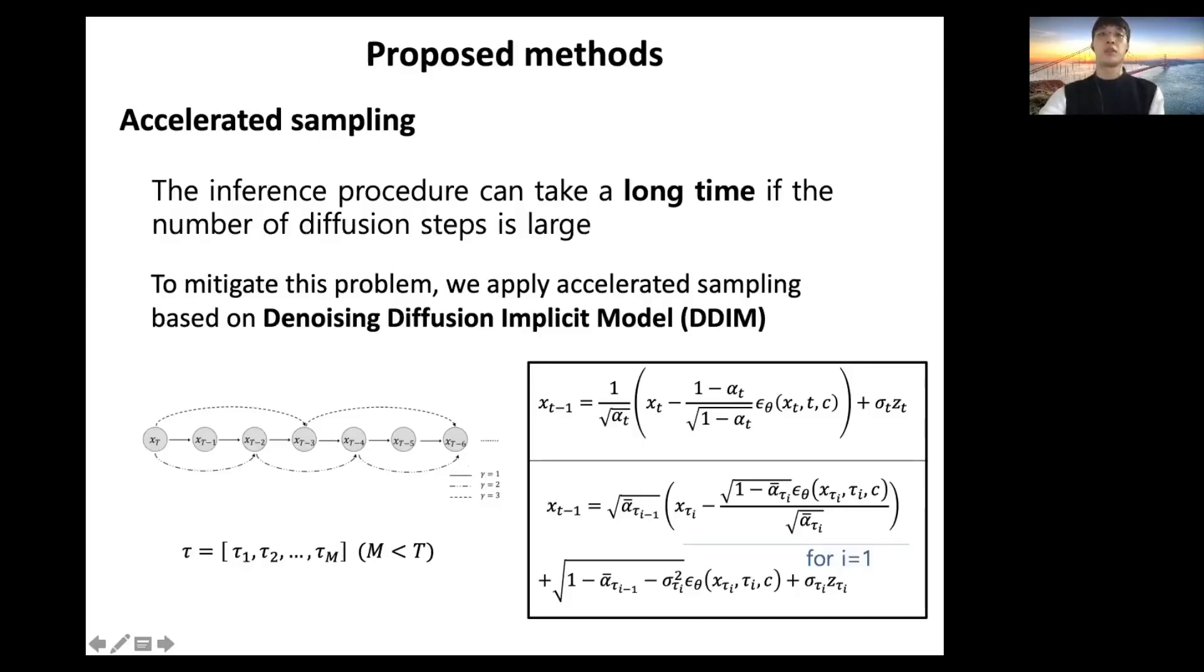The accelerated sampling generates samples over a subsequence of the entire inference trajectory. For implementation, the reverse transition is skipped by a decimation factor gamma. The first equation is normal diffusion sampling and the second one is accelerated sampling.